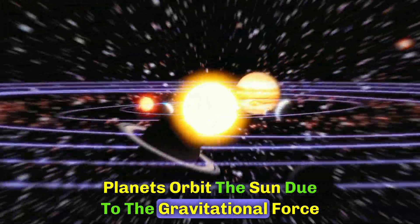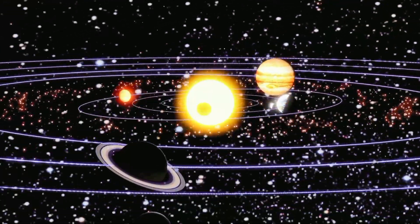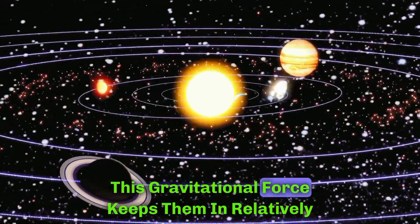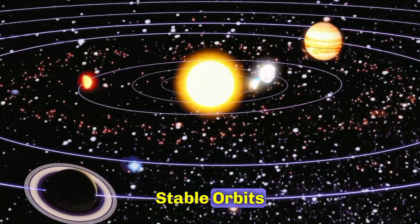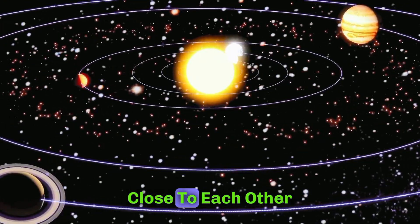Planets orbit the Sun due to the gravitational force between them and the Sun. This gravitational force keeps them in relatively stable orbits, preventing them from colliding or coming too close to each other.